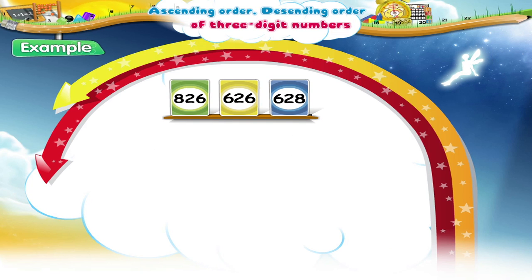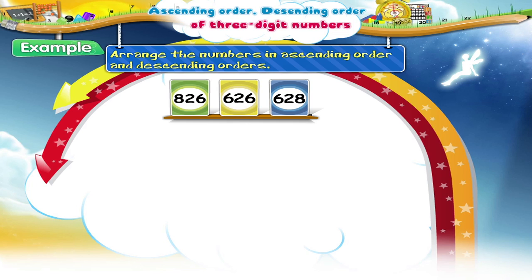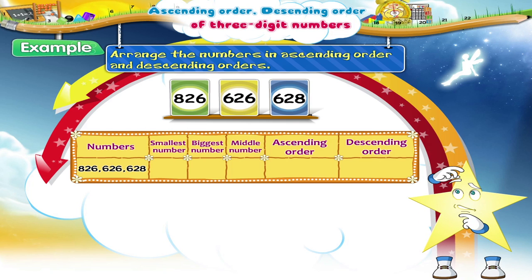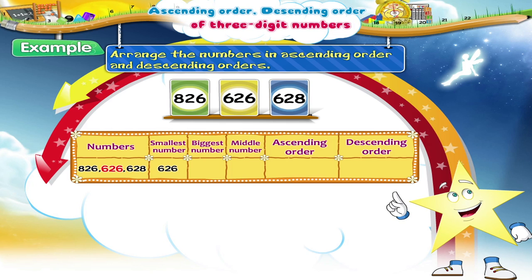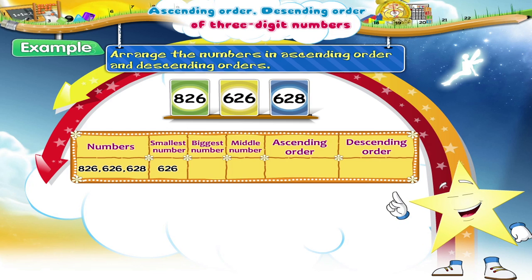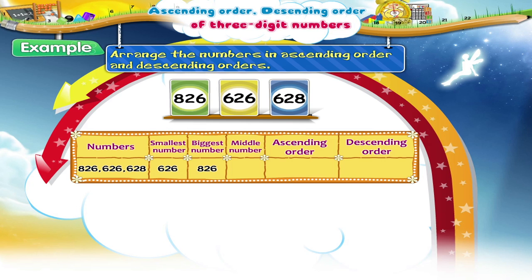Now, take these stickers and let's arrange them in the ascending and descending order of the numbers shown on them. Starry, which is the smallest number here? It is 626. And which is the biggest number? 826 is the biggest number. So the middle number is 628.